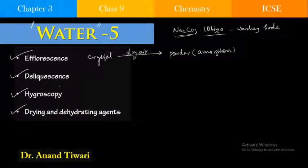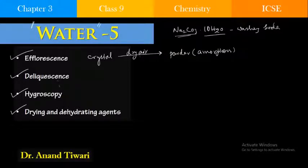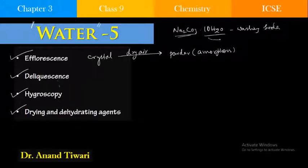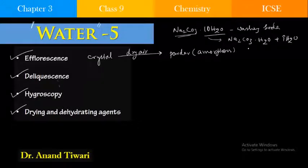Generally, when we are exposing to dry air — which has very less moisture content — the vapor pressure in the hydrated crystals exceeds that of the outside dry air, so the crystals are able to lose that water. For example, in washing soda, when it is exposed to dry air, it becomes monohydrated: Na2CO3·H2O, and the 9H2O is lost as water vapor into the dry air as moisture.